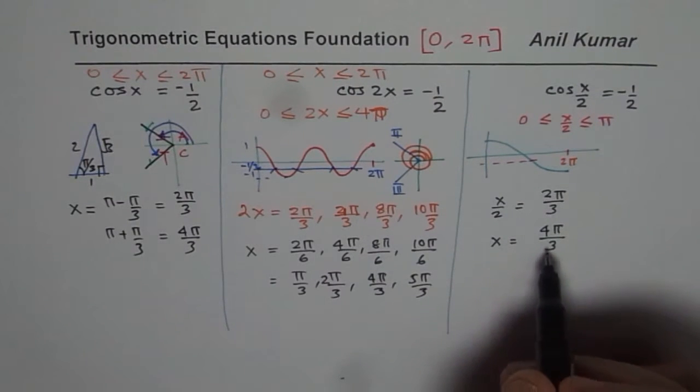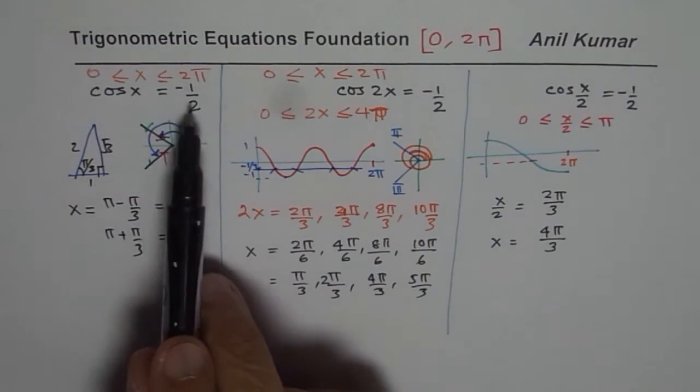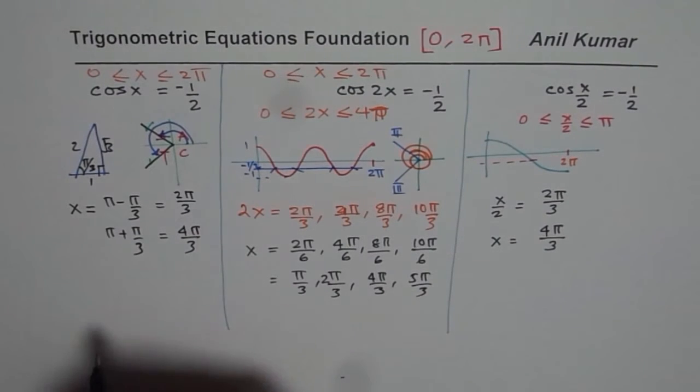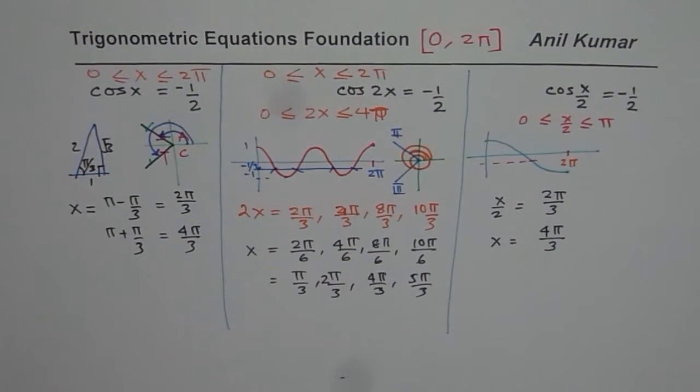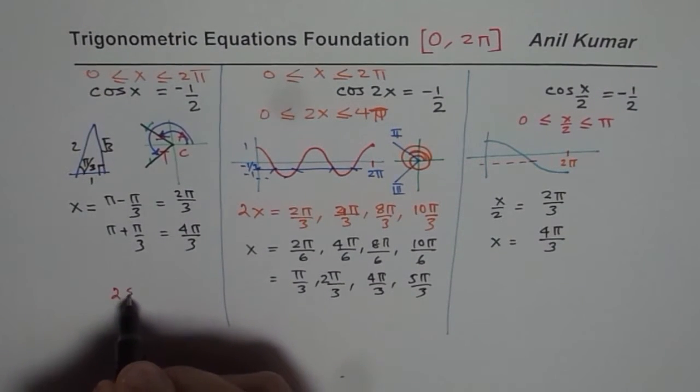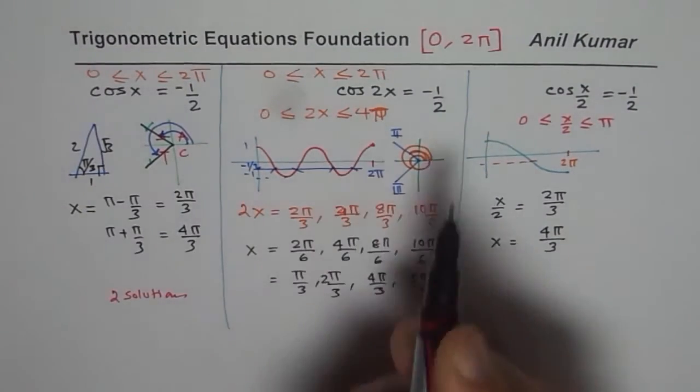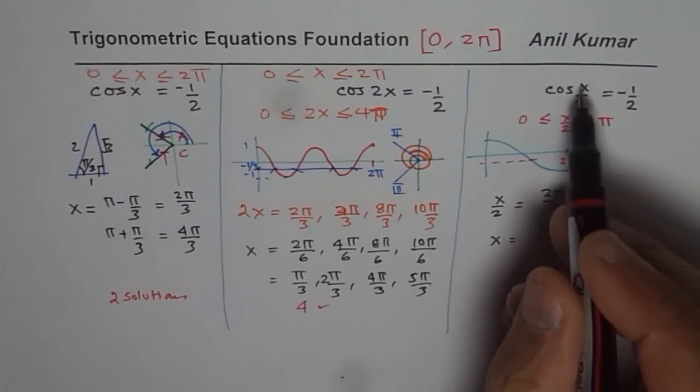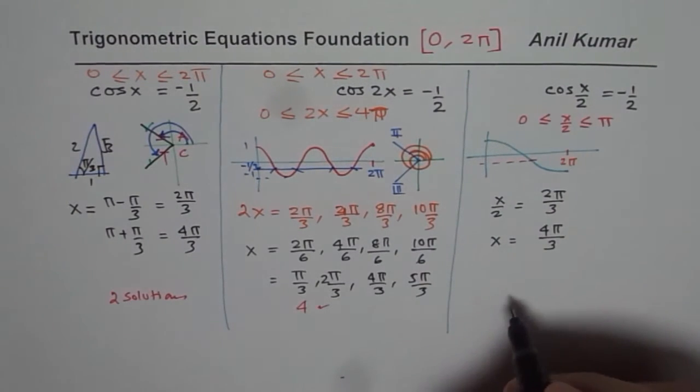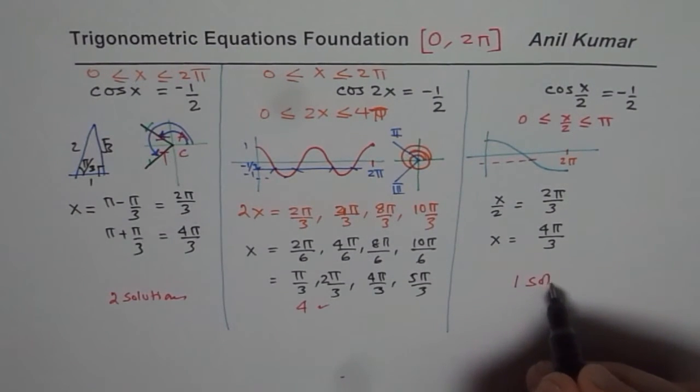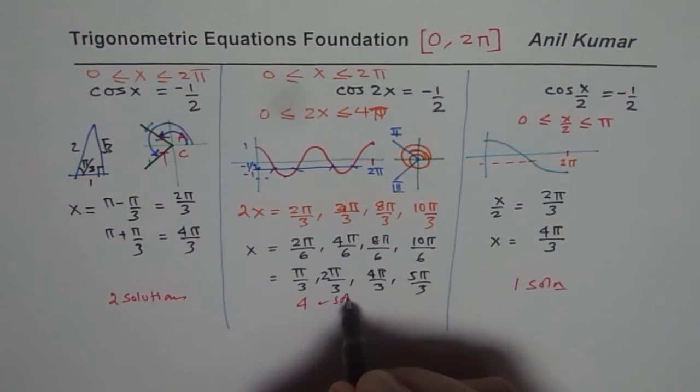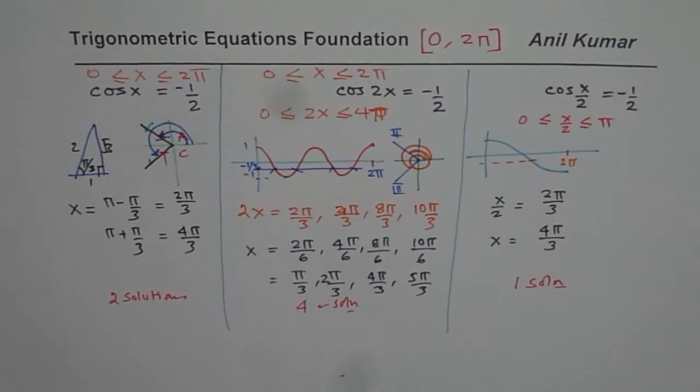Otherwise, you will get the wrong answer. So if the question is cos x equals this, how many solutions you get? You get 2 solutions. But if I have cos 2x, then I get 4 solutions. And if I have cos x by 2, I just get 1 solution. So that is how it changes.